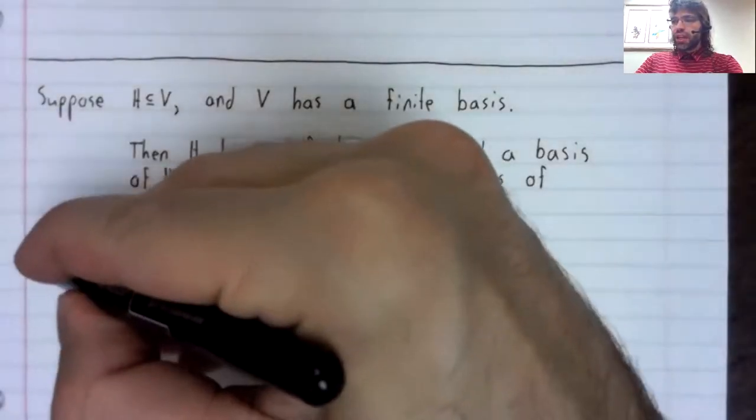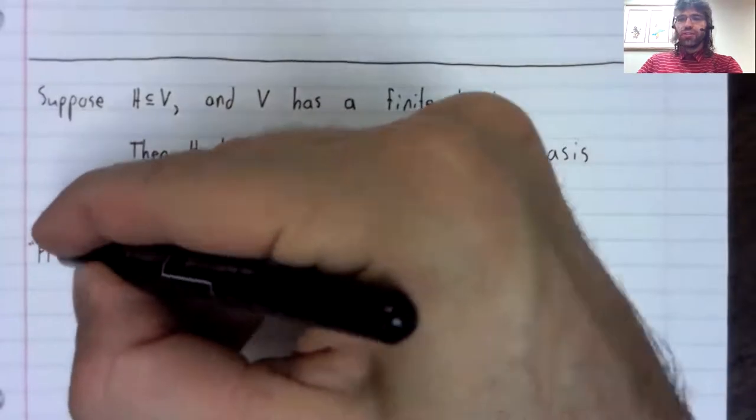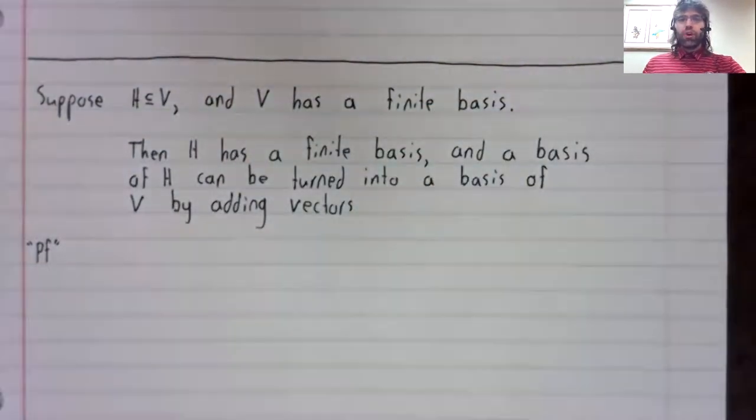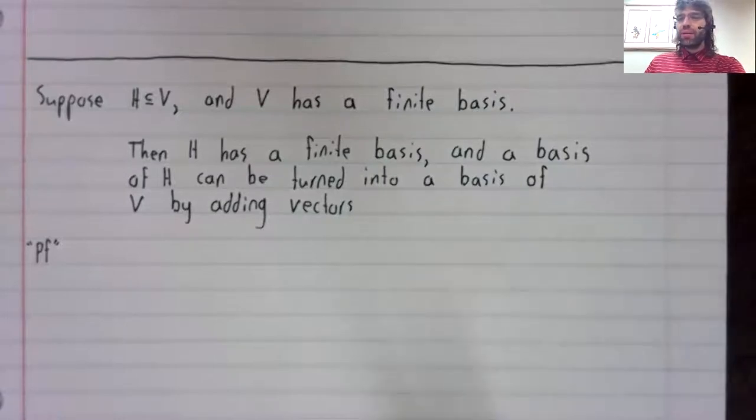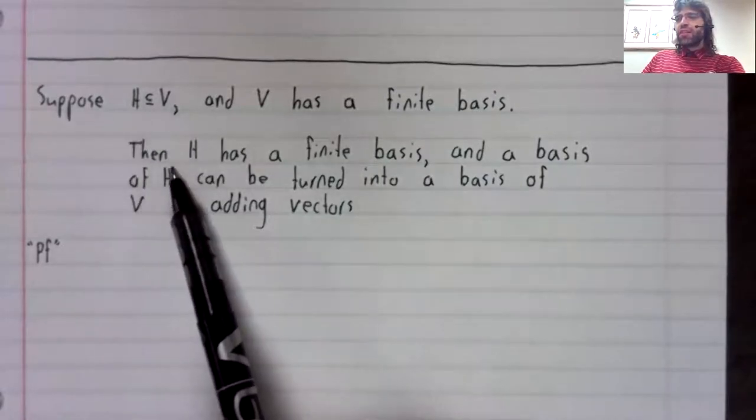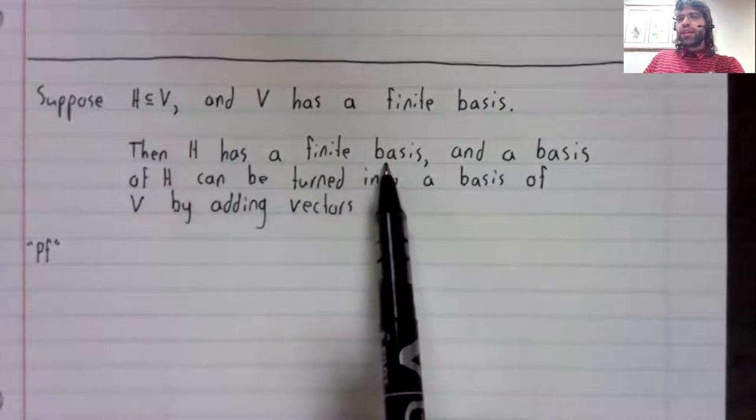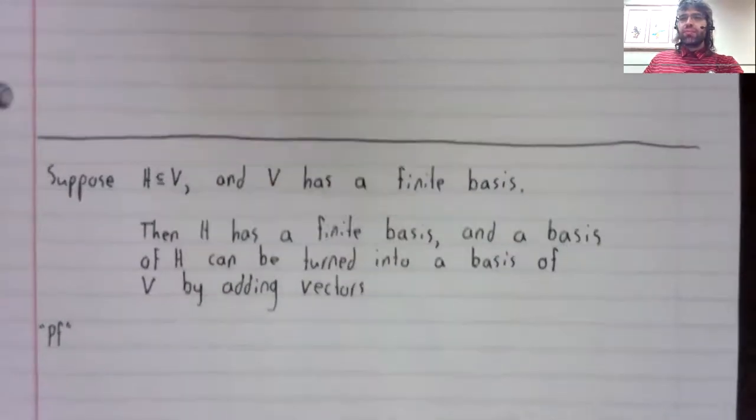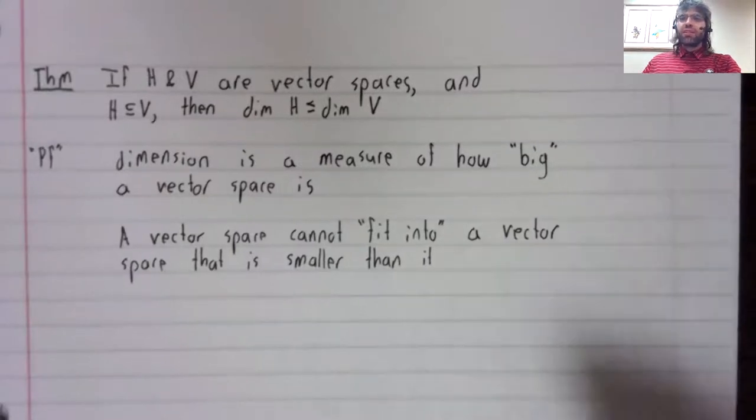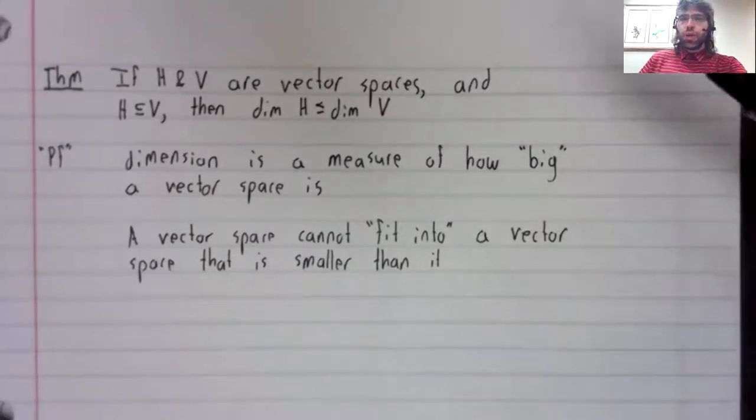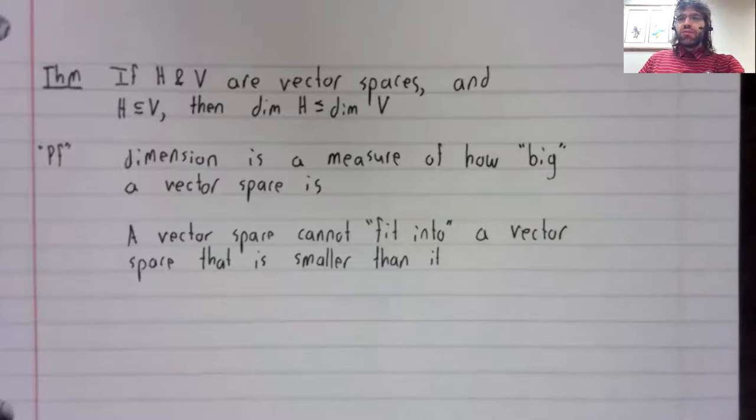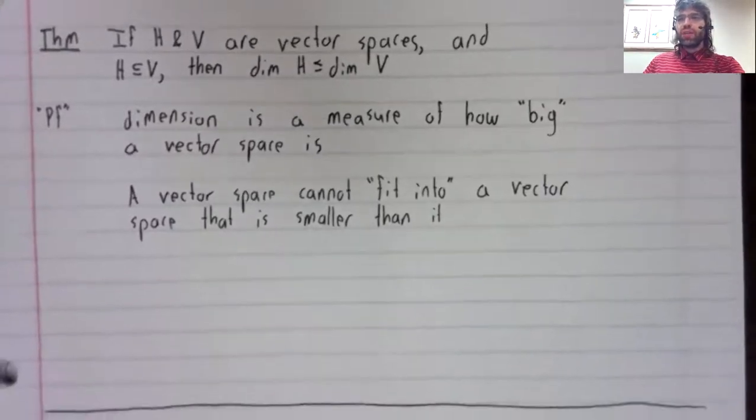Let's again argue why this is true. It falls short of being a formal proof, maybe, but the fact that H has a finite basis is basically this theorem. If a space is finite dimensional, it is smaller than an infinite dimensional space.